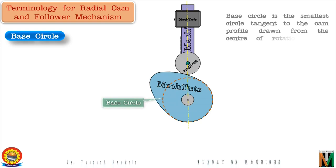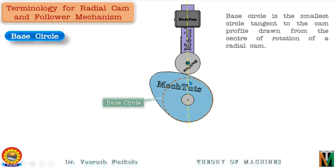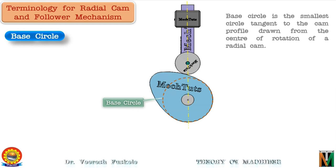The base circle really defines the size of the cam. It is the difference of the distance of the cam surface from the cam center and the radius of the base circle that defines the movement of the follower. So this distance defines the displacement at this position. When the roller is in contact with the base circle the follower is at the lowest position.